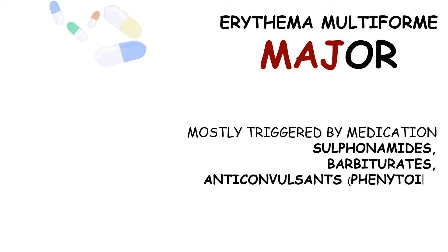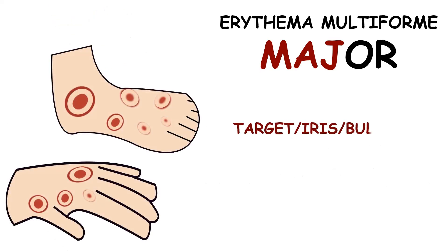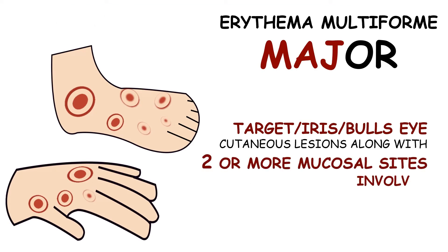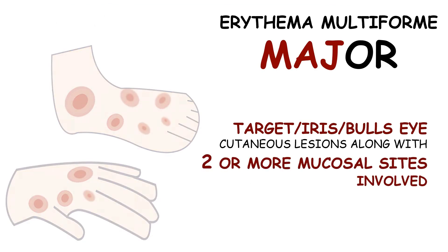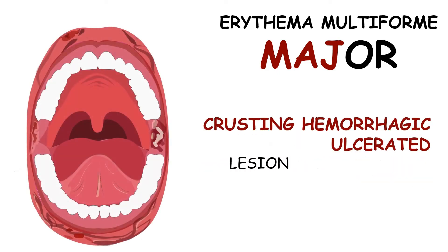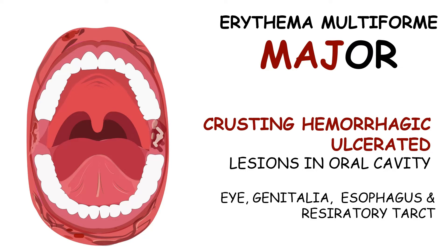Erythema multiforme major is mostly triggered by medications like sulfonamides, barbiturates, and anticonvulsants like phenytoin. Numerous target, iris, or bullseye cutaneous lesions are formed along with two or more mucosal sites involved. Characteristic crusting, hemorrhagic, ulcerated lesions are seen in the oral cavity, while other mucosal sites that could be involved include the eye, genitalia, esophagus, and the respiratory tract.